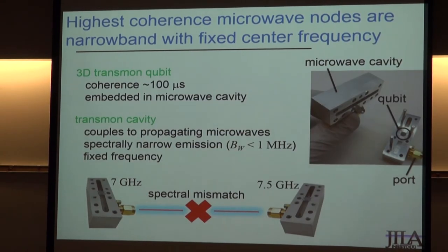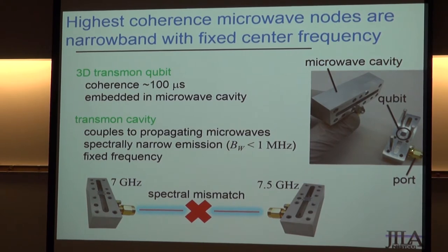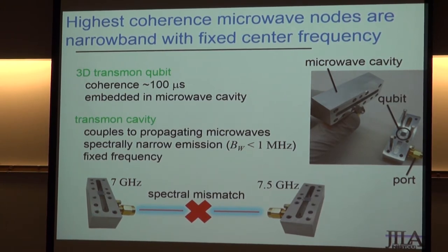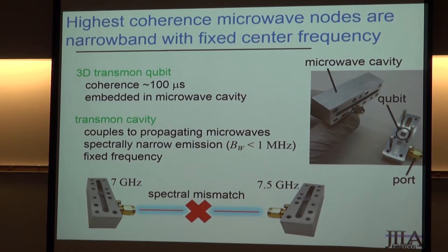I'm imagining that those nodes are going to be built from superconducting circuits — some kind of superconducting qubit, the most coherent of which are built from Josephson junction circuit elements, sitting inside of three-dimensional volumetric microwave cavities, with some coupling between the qubit and the cavity field. It's very natural to imagine communicating using the microwave fields in the cavity, which naturally decay into propagating modes running through transmission lines.